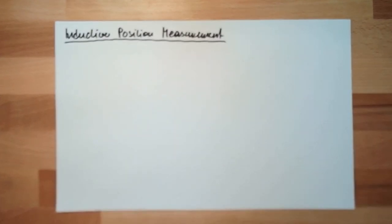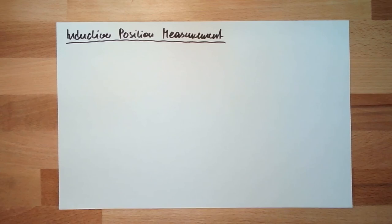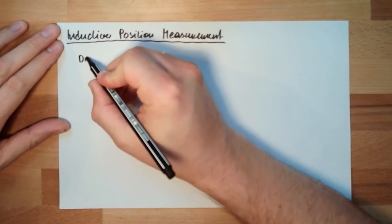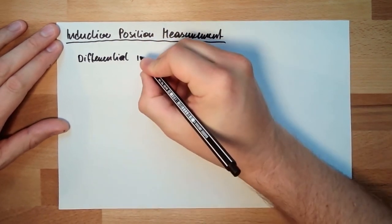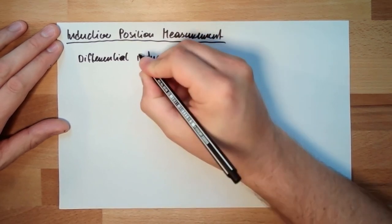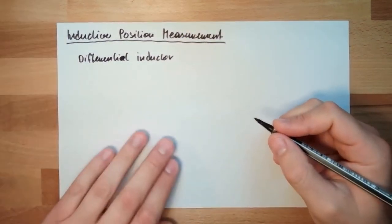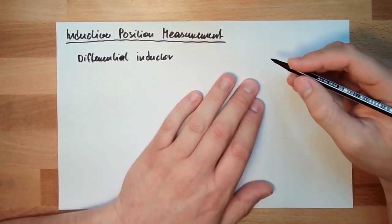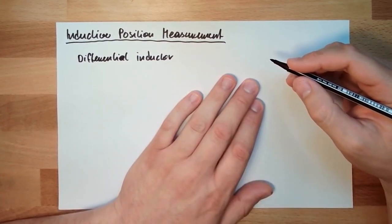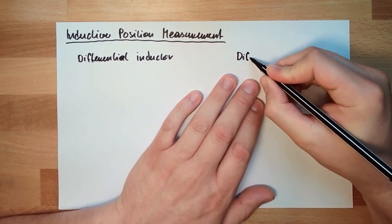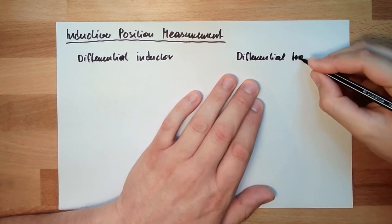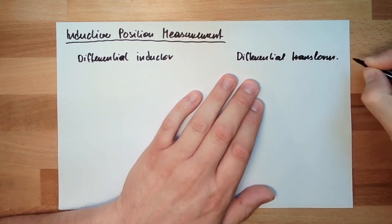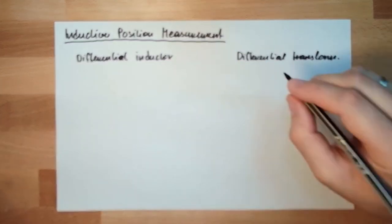There are two possibilities. One possibility is the so-called differential inductor, or in German 'Differentialdrossel,' and the other possibility is the so-called differential transformer.